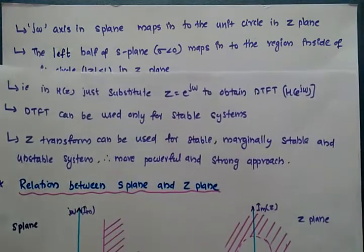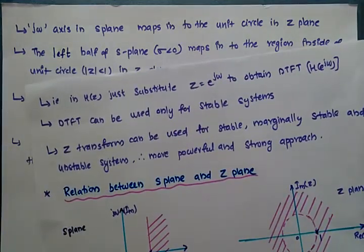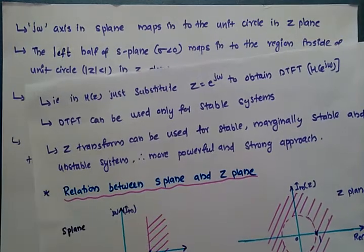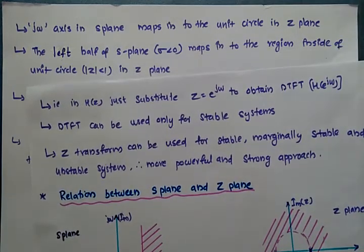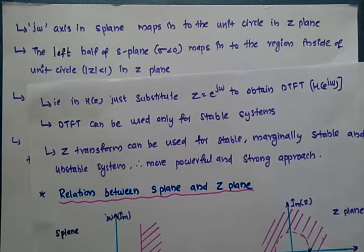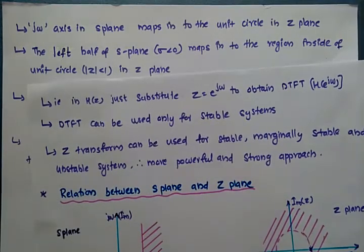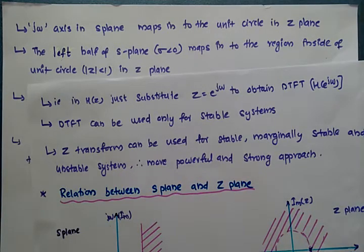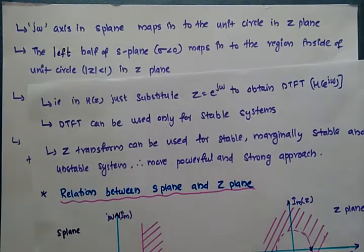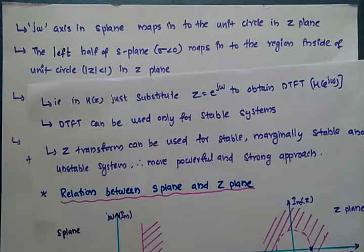By comparing the S-plane and Z-plane, we can say that the left half of the S-plane (sigma less than 0) maps into the region inside the unit circle, that is, |Z| less than 1. The right half of the S-plane (sigma greater than 0) maps to the region outside the unit circle.